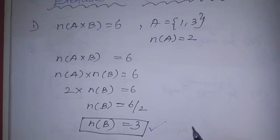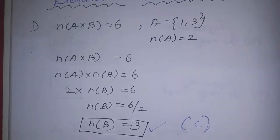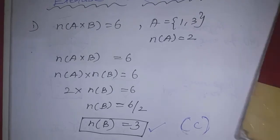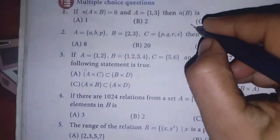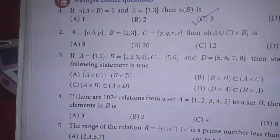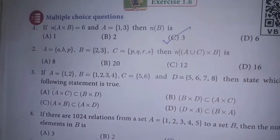What option? Option C is in your book. Option C is the correct answer for the first sum. Next, second sum.